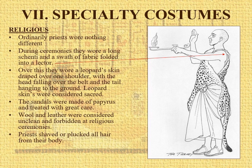Specialty costumes: priests wore nothing really different — usually a long shinti, maybe a cloth of fabric folded, and a leopard skin, which was highly prized by religious orders as a symbol of religious power. Sandals are the same, but no wool or leather — very unclean, forbidden. And priests must either shave or pluck all hair from their body.